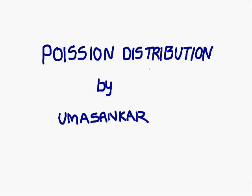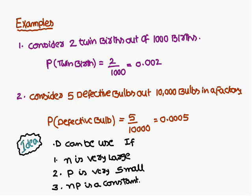Today we are going to discuss the Poisson distribution. So what is meant by Poisson distribution we will discuss. Till now what we have studied is the binomial distribution. In the binomial distribution you come across the characters n, p, q, and r. n stands for the total number of trials, p stands for the probability of success, and q stands for the probability of failure. Now we are going to discuss the Poisson distribution and when we can use it.